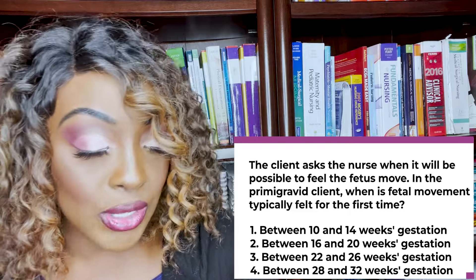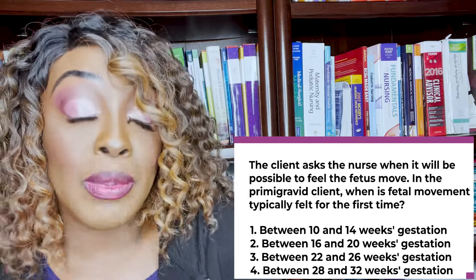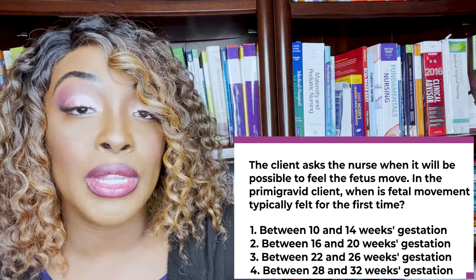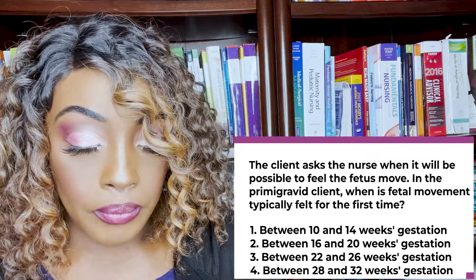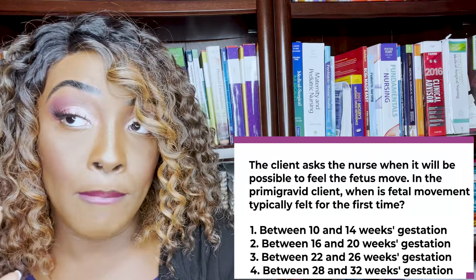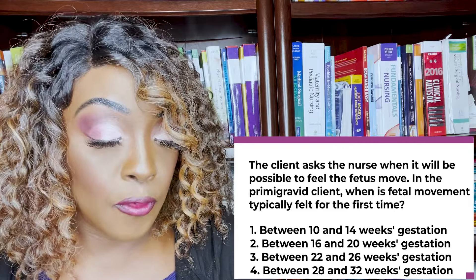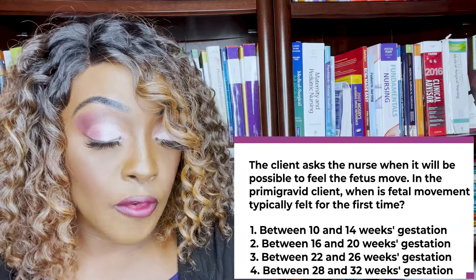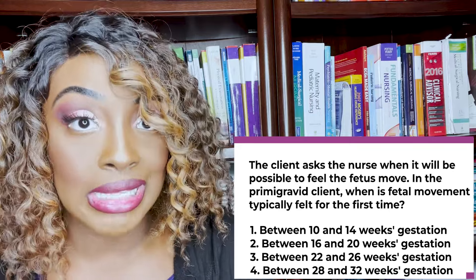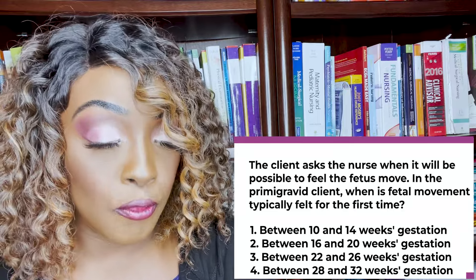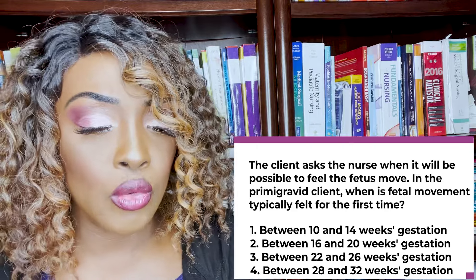If she's been pregnant before — a multigravida — she'll feel it a little bit earlier, around 14 to 16 weeks. Having a first-time pregnancy versus multiple pregnancies makes a difference in knowing which timeframe to apply. For this patient, it's her first time pregnant, so you'd tell her to expect quickening between 16 and 20 weeks. Make sure you know both of those timeframes.